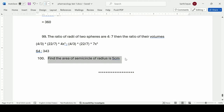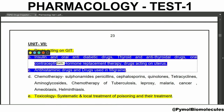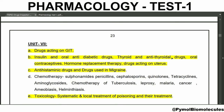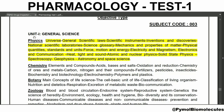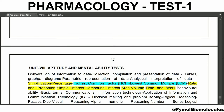For the next test in pharmacology, the topics are: insulin and oral anti-diabetic drugs, thyroid and anti-thyroidal drugs, oral contraceptives, hormone replacement therapy, drugs acting on the uterus, antihistaminic drugs, and drugs used in migraine. In general studies, all topics will be from physics. In aptitude and mental ability, the topic will be simplification. See you in the next week.